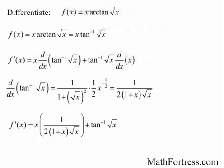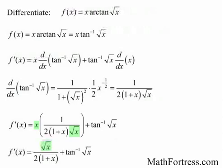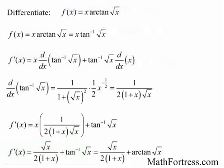Substituting the values for the derivatives, we have the expression. Now x times the square root of x simplifies to x to the three-halves, so the final derivative is equal to the square root of x over 2 times the quantity (1 plus x), plus arctangent of the square root of x. You can also rewrite tangent inverse as arctangent.